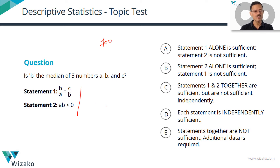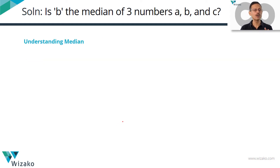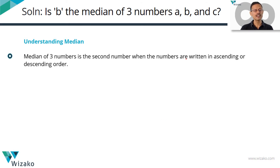We've been given two statements. Before we look into the statements, let's get a quick idea about what median is. For three numbers, if you arrange them in ascending or descending order, the second number — the middle number — is going to be the median. We can write the numbers in ascending order and find which of the three ended up being the second number. That will give us the median.